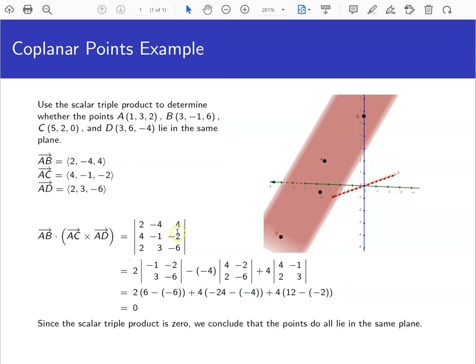Now that we do the determinant, we can expand along the first row, just like we do when we have i, j, k, except now we'll use the coefficients of 2, -4, and 4 instead of i, j, and k. Eliminate the row and column that contain 2—we're left with -1, -2, 3, and -6. Eliminate the row and column containing -4—we get 4, -2, 2, -6. Multiply that by the -4, and remember the middle one is always a minus. Eliminate the row and column containing the 4—we're left with 4, -1, 2, 3. That's our third term that we'll need to compute.